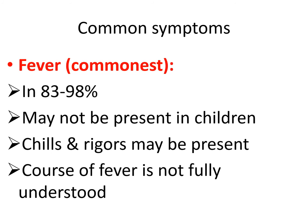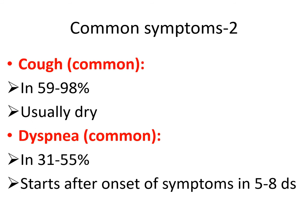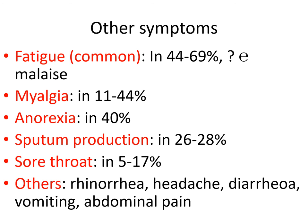In severe disease, symptoms include difficulty waking, confusion, bluish face or lips, coughing up blood, persistent chest pain, decreased white blood cells, kidney failure, and high fever. Regarding individual symptoms: fever is present in most patients but may not appear in children. Cough may affect nearly all patients and is usually dry. Dyspnea occurs in 55% and starts five to eight days after onset of symptoms. Other symptoms include fatigue, myalgia, anorexia, sputum production, sore throat, and diarrhea.